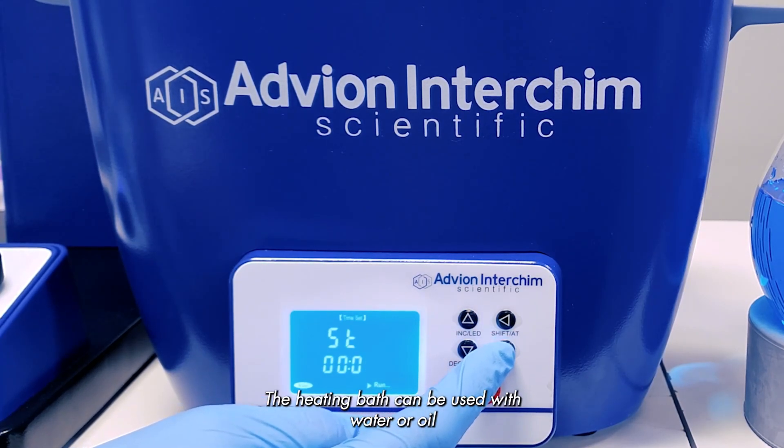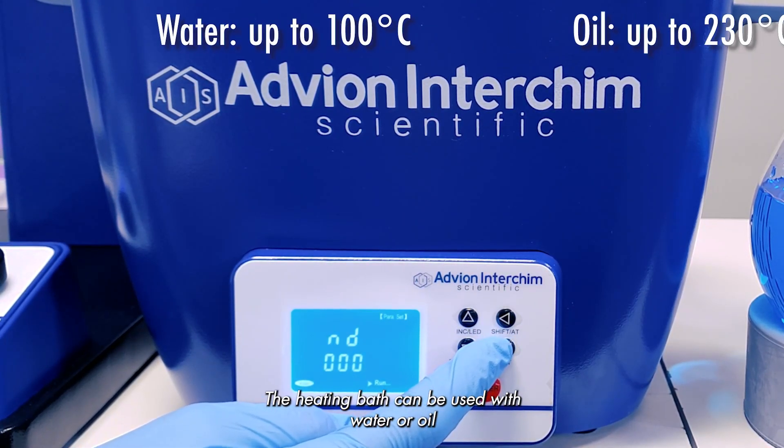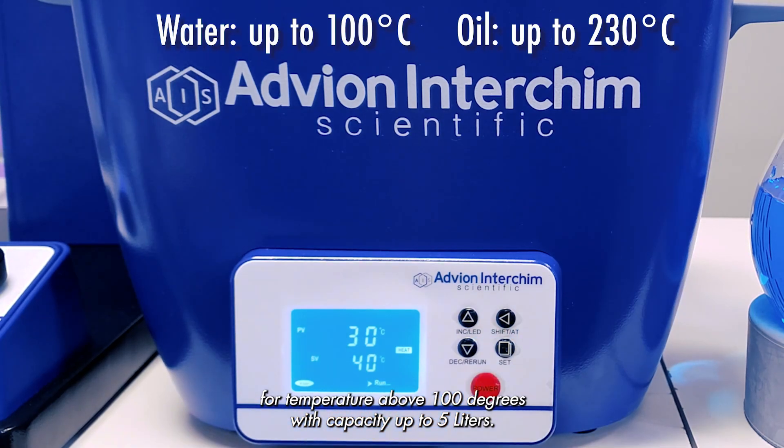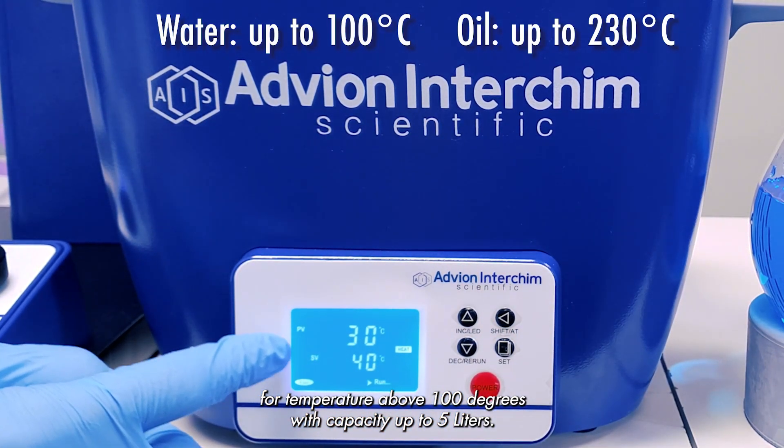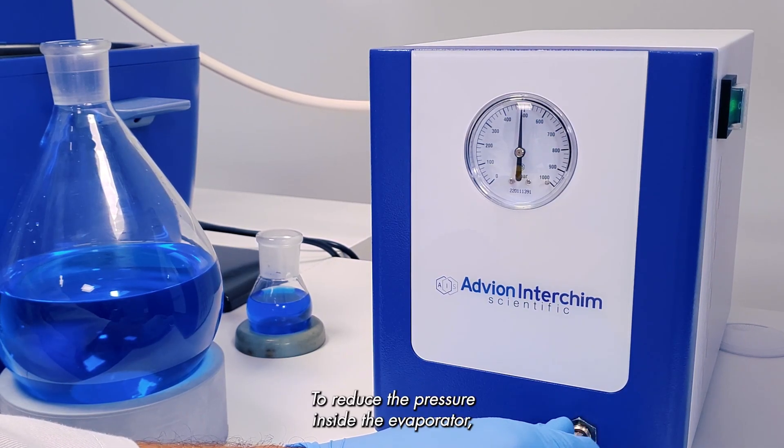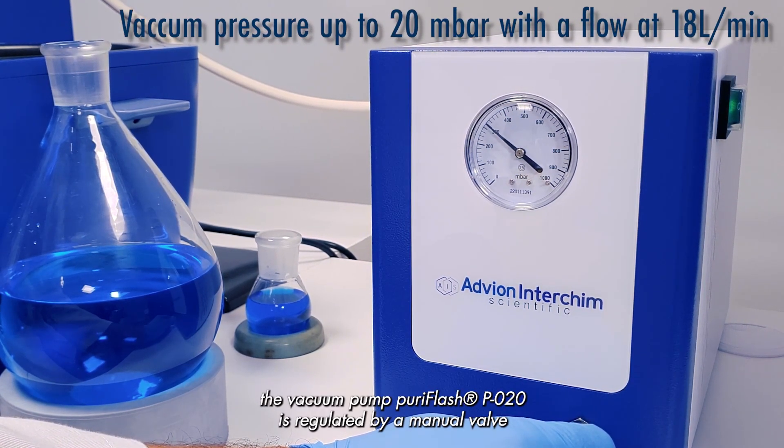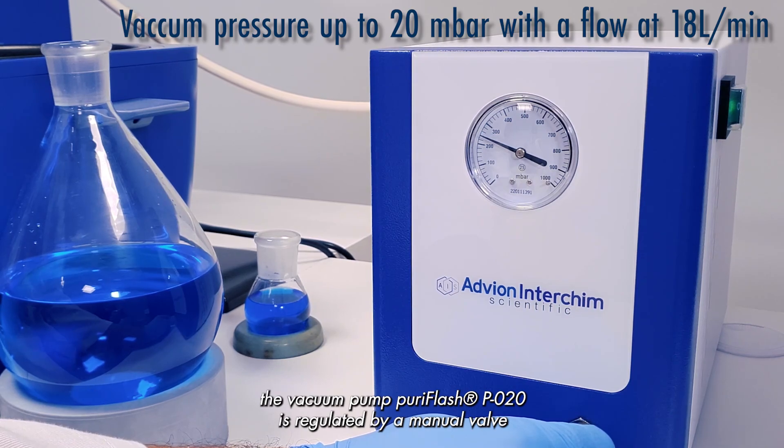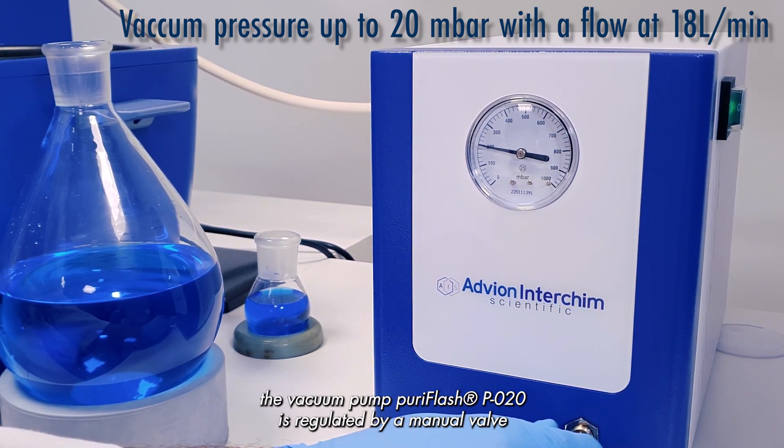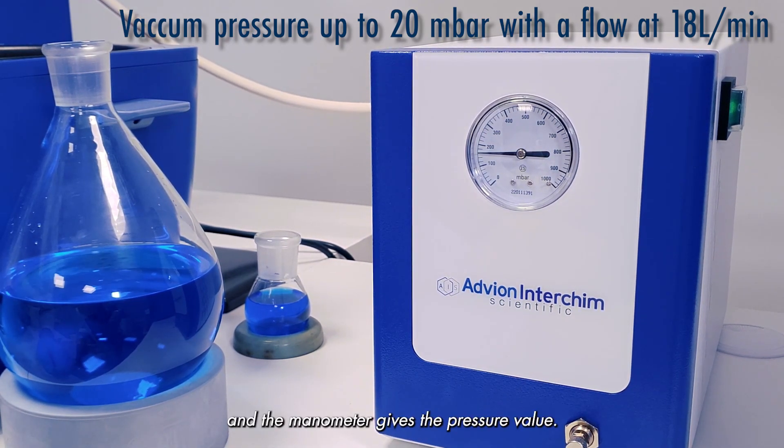The heating bath can be used with water or oil for temperatures above 100 degrees with capacity up to 5 litres. To reduce the pressure inside the evaporator, the vacuum pump Puriflash P-020 is regulated by a manual valve and the manometer gives the pressure value.